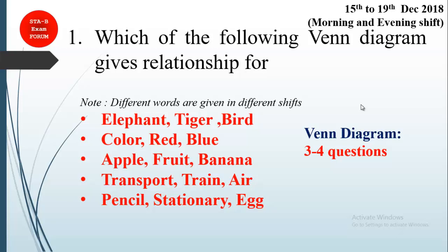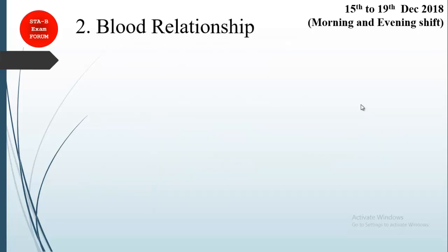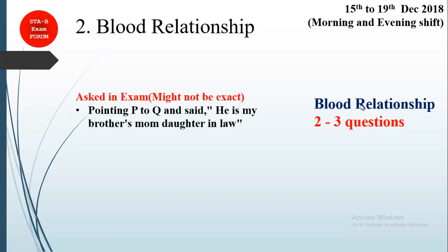We are not presenting the Venn diagrams because students were not able to remember them exactly. Other examples include: colors — red and blue; apple, fruit, and banana; transport, train, and air; pencil, stationary, and egg. The level of difficulty is simple but very important. This topic is very important from the upcoming exam point of view.